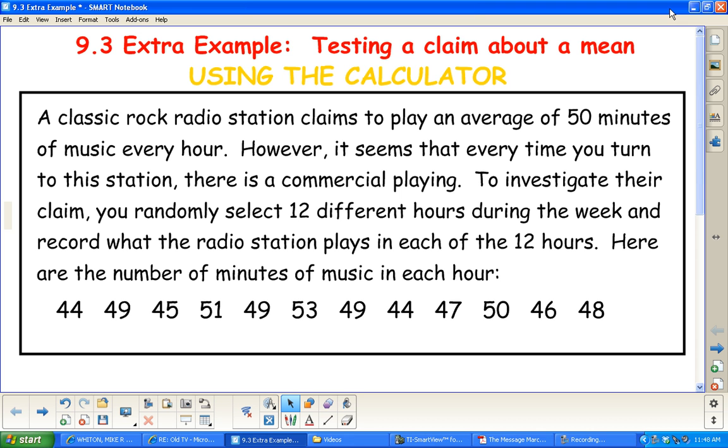So the situation was a classic rock radio station claims to play an average of 50 minutes of music. Basically, you think that they are overestimating. You think they play less than that. So you want to test their claim. You go ahead and get a sample of 12 different hours during the week and record the number of minutes of music per hour. So here's your 12 values. And we want to test the claim about the mean being 50 or the alternative will be that it's less than 50.